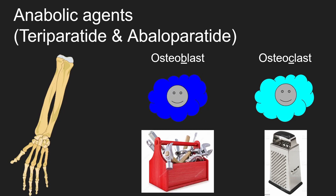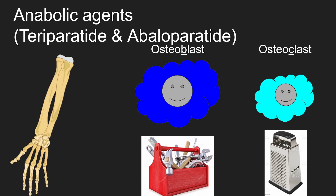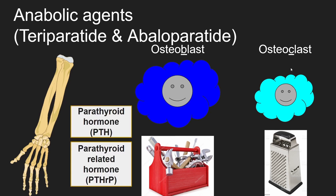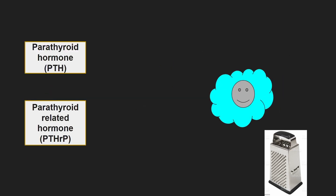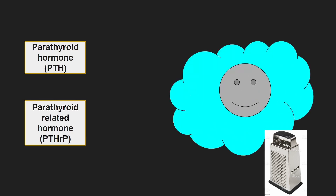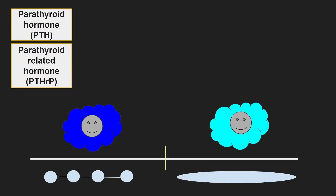Next, we have teriparatide and abaloparatide. Their influence is on osteoblasts. The way they work is by copying hormones in our body that affect osteoblasts — for teriparatide, it is parathyroid hormone; for abaloparatide, it's parathyroid-related hormone. These two hormones can increase osteoclast activity as well. The actions of these hormones change depending on the duration of their presence: in short bursts they increase osteoblast activity, and in prolonged durations they increase osteoclast activity.